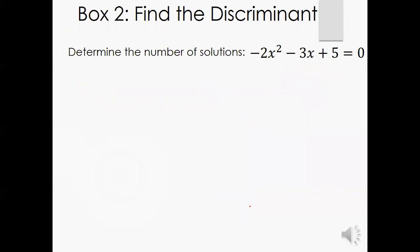So in box two, for example, it says determine the number of solutions. Did it say solve this? No. It just wants you to determine the number of solutions. So we have negative 2x squared minus 3x plus 5 equals zero.